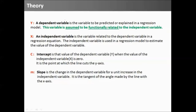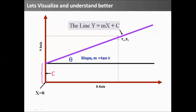This is merely theory. Let's visualize and understand it better. Let's say we have a y axis and x axis. We have a line y equal to mx plus c. At x equal to 0, the value of y would be the intercept.